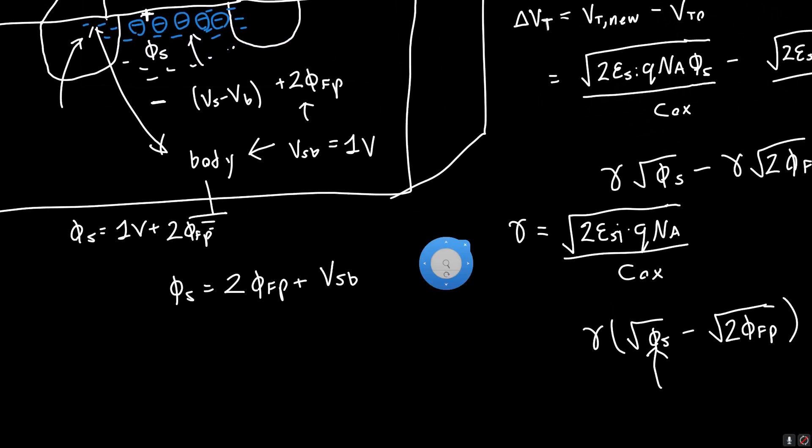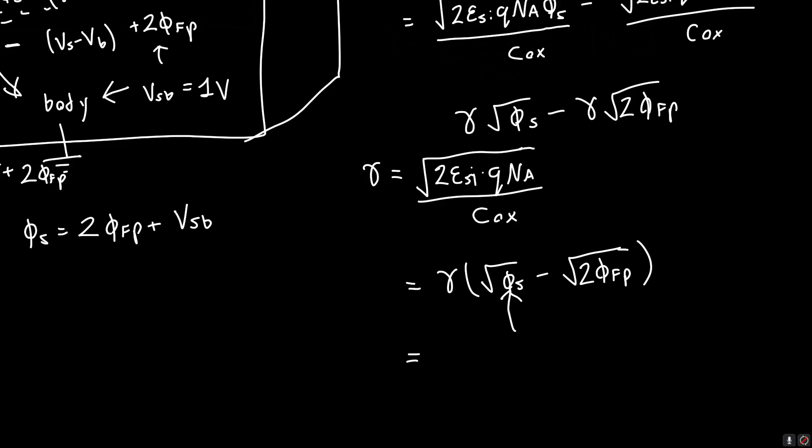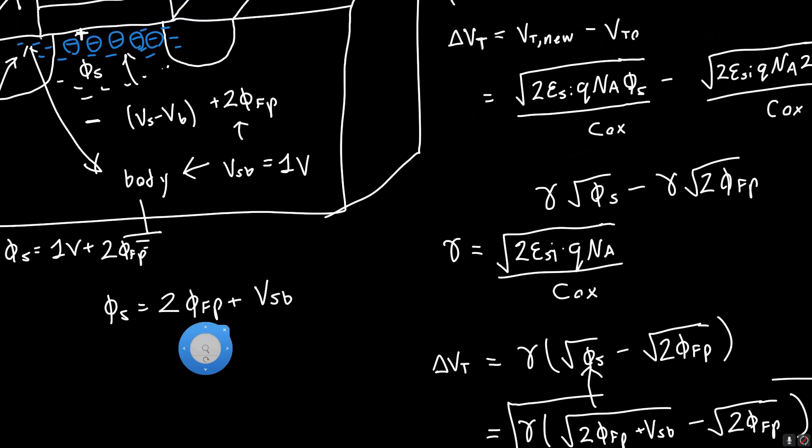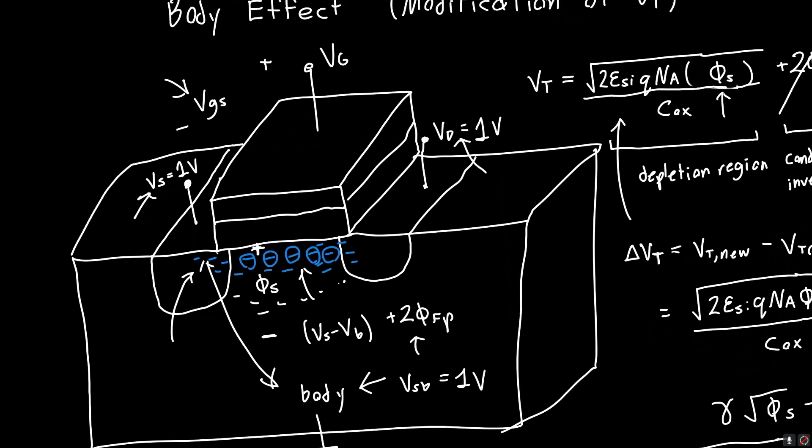We can just plug that into our equation. The change in threshold voltage, delta Vt, is just equal to gamma times square root of 2 phi_FP plus Vsb minus square root of 2 phi_FP. And we're done. That is the body effect. I don't really like to think of it as an actual effect because it's just an artifact of how we are applying the voltages in the system. Ultimately you can trace everything back to this surface potential psi_S.